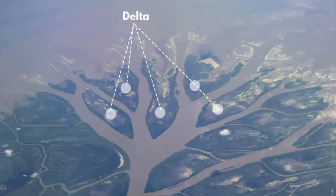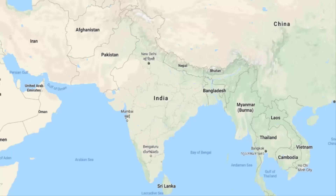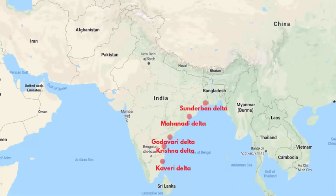In India, you will find deltas at all those places where major rivers meet the Bay of Bengal. For example, the Sundarbans delta, Godavari river delta, Kaveri river delta, Mahanadi river delta, Krishna river delta, and Bhitarkanika delta.